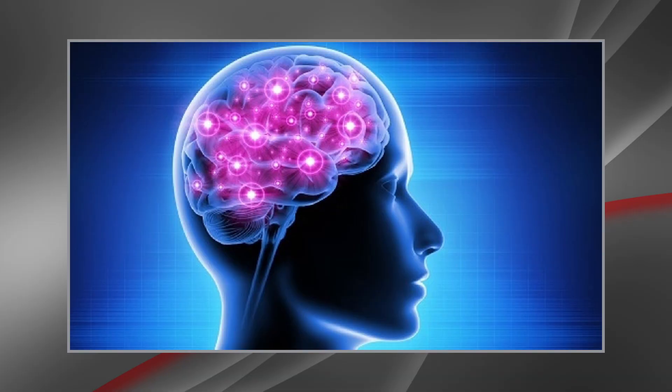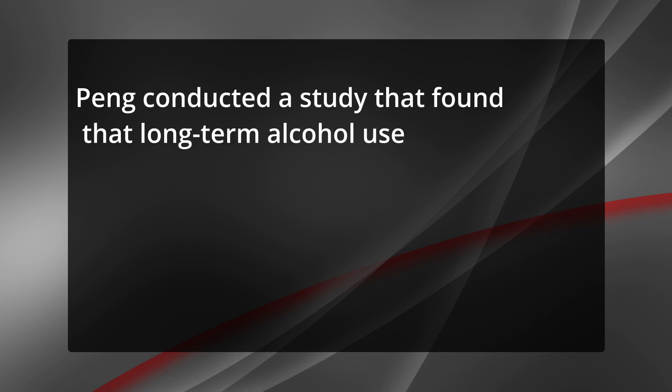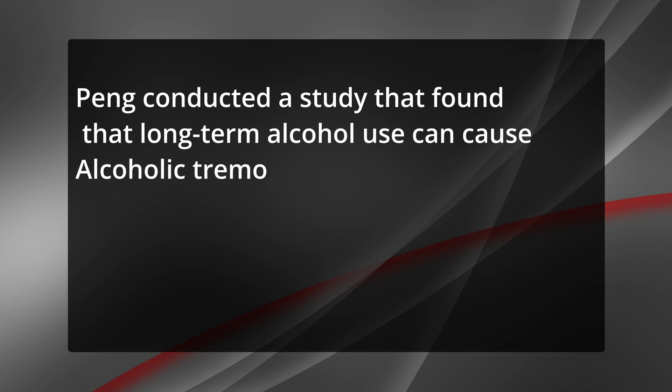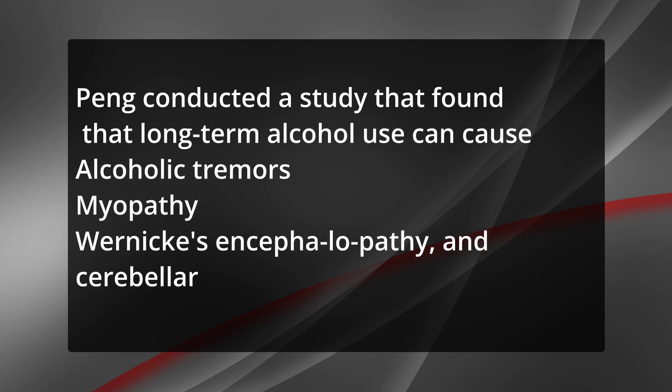5. Neurological complications: The effects of drinking alcohol in the short term, which can be reversed after ceasing alcohol intake, include blackouts, blurred vision, memory loss and slow reflexes. Long-term alcohol use can cause alcoholic tremors, myopathy, Wernicke's encephalopathy and cerebellar degeneration.